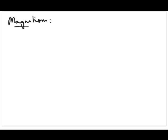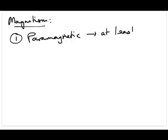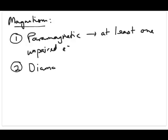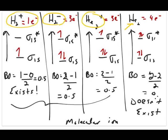One more concept: magnetism. There are two types of magnetic properties. A molecule or atom is paramagnetic if it has at least one unpaired electron. Compounds or atoms are diamagnetic if all their electrons are paired. Looking at our previous question, H2+, H2−, and He2+ are all paramagnetic because they each have at least one unpaired electron. And He2, if it existed, would have been diamagnetic.